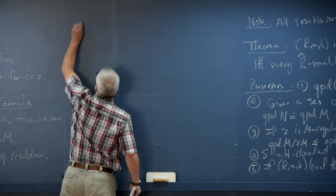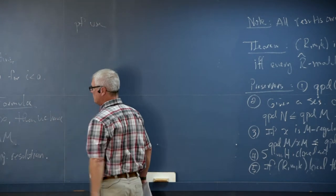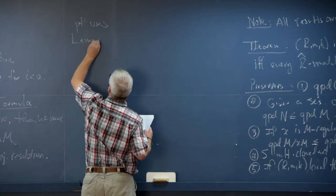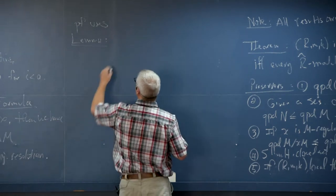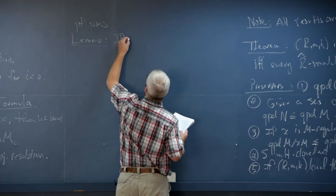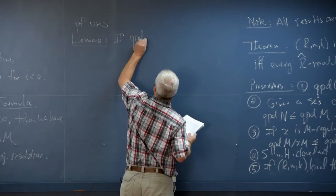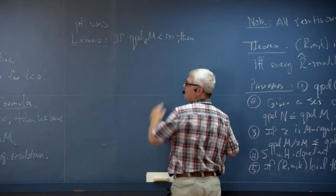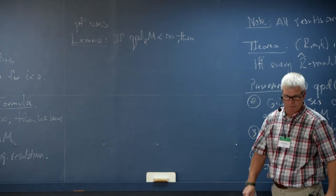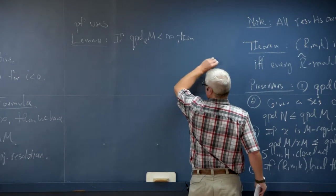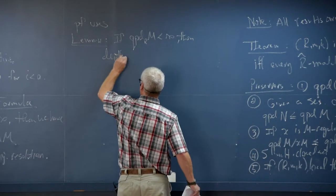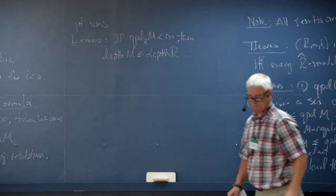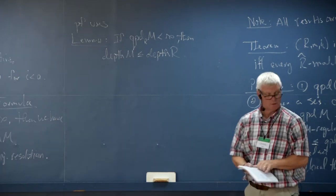The proof of the Auslander-Buchsbaum formula uses an important lemma: if the quasi-projective dimension of a module is finite, then the depth of M has to be less than or equal to the depth of R.